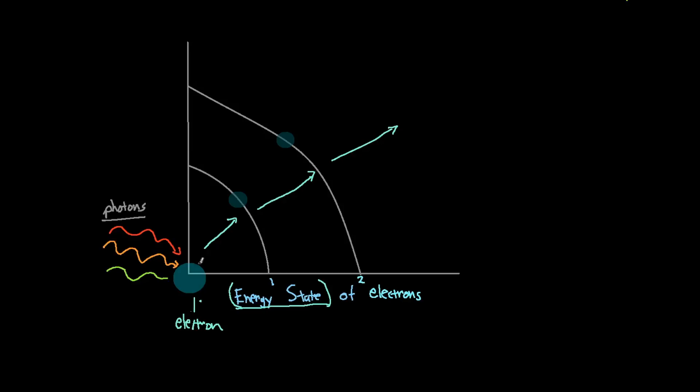And an electron cannot be bumped here and be considered the first energy state. Or it cannot be bumped just right here and just say that it's part of the second energy state. It must have a discrete amount of energy before it reaches a certain energy state.